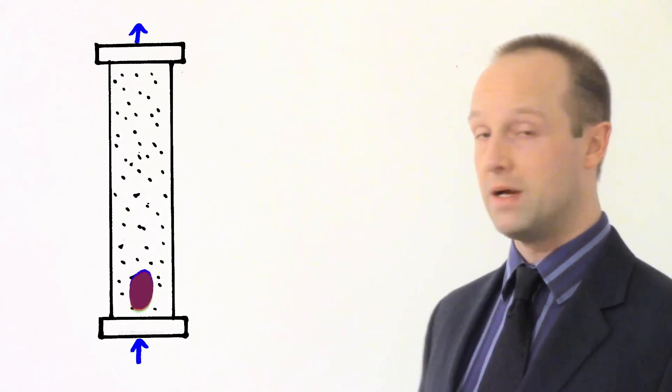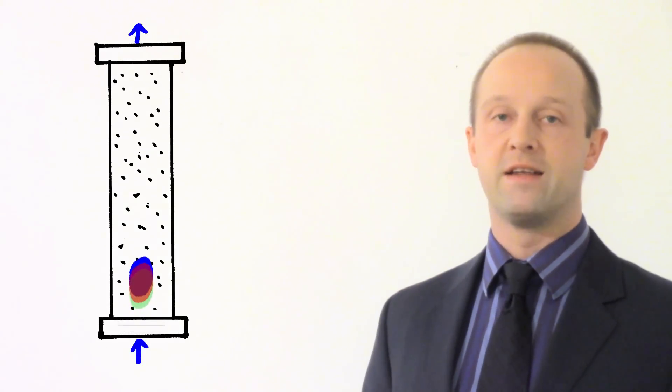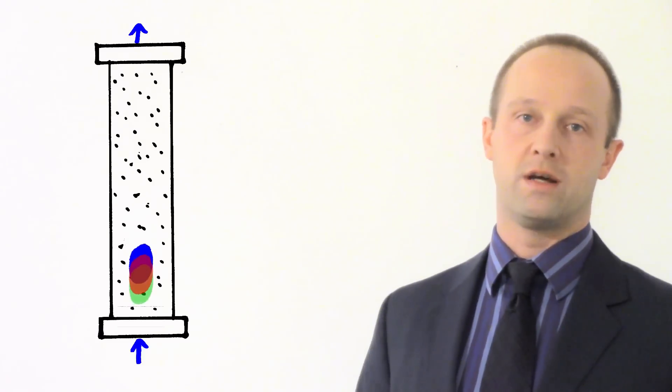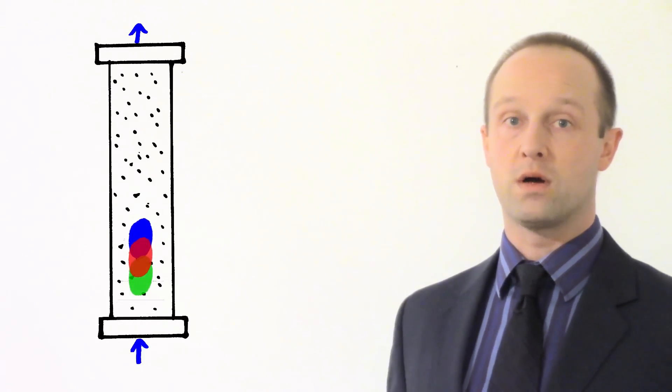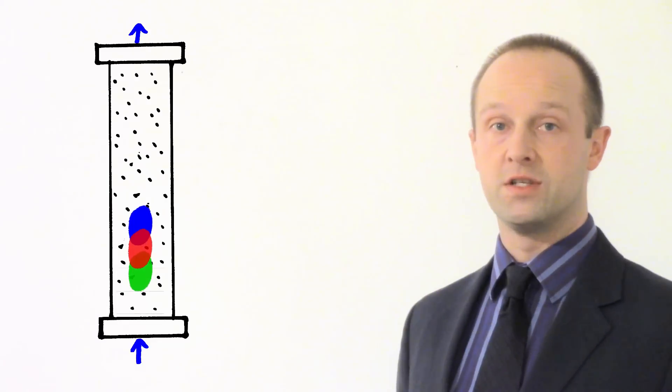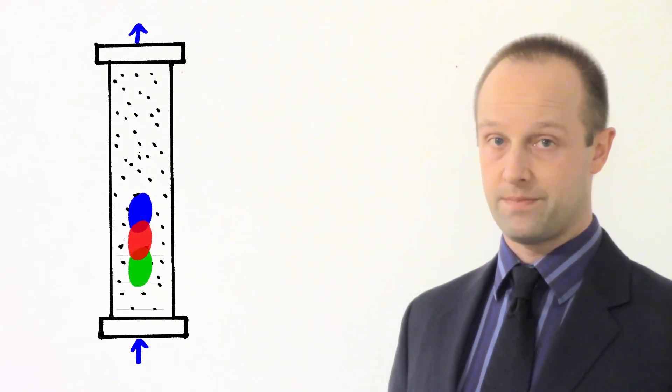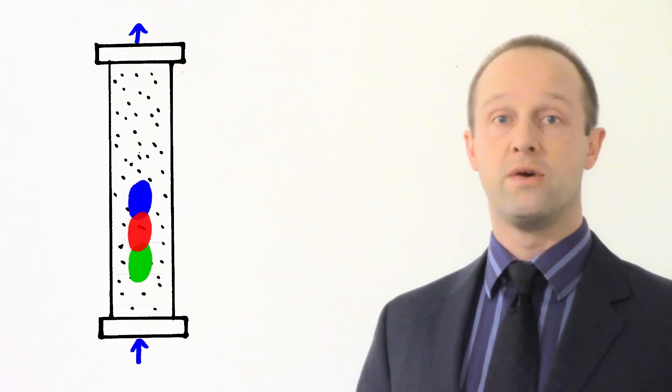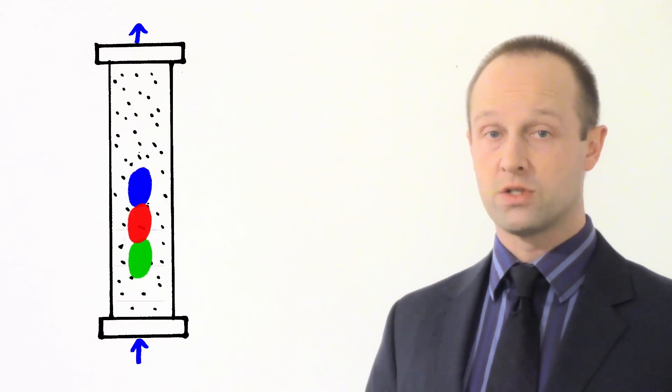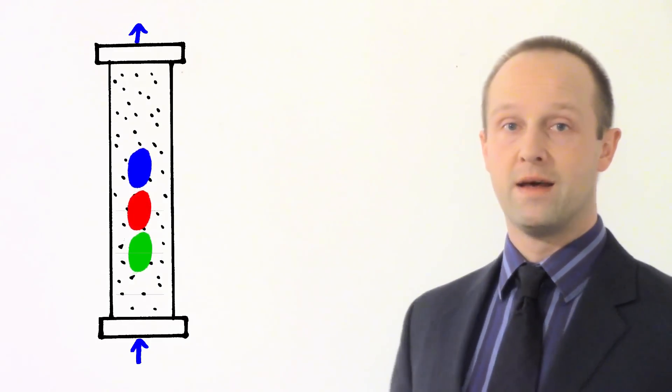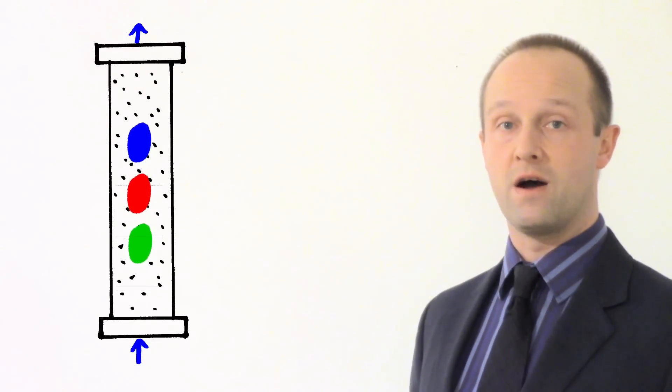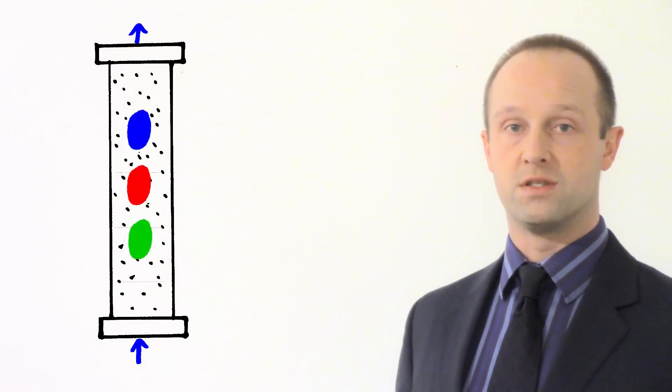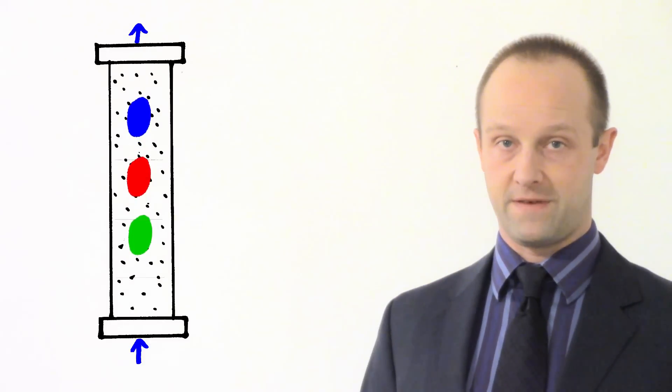Instead of a piece of paper, what you have is a column packed with a solid and instead of a liquid solvent like water or ethanol, what you have is a gas and that gas is what carries your different substances along this column. Now if you're doing the 21st century OCR course, then be aware that the solid in the column, that is the stationary phase and the gas moving along the column carrying those different substances with it, that is the mobile phase.